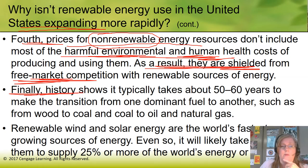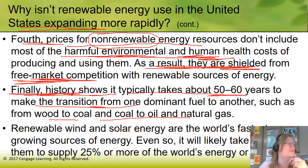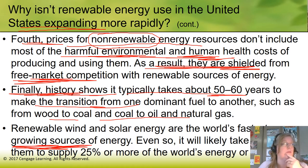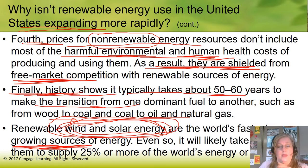Finally, history shows that it takes about 50 to 60 years for a transition from one dominant fuel to another — such as from wood to coal, then coal to oil. So it's a slow switchover. Renewable energy — wind and solar — are still the world's fastest growing industries. But even so, it's likely to take many decades before we can get up to 25 percent or so.